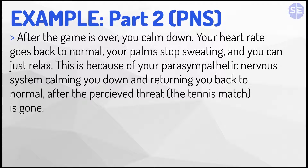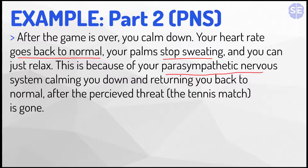Part 2 of the example. After the game is over, you calm down. Your heart rate goes back to normal, your palms stop sweating, and you can just relax. This is because of your parasympathetic nervous system calming you down and returning you back to normal, after the perceived threat — which is the tennis match — is gone.